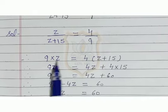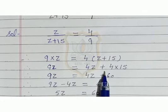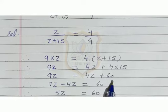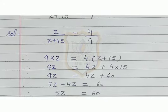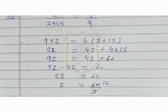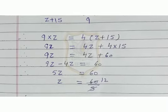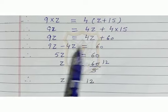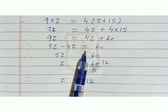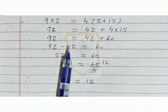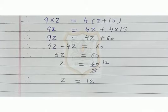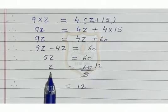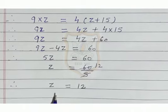So we get 9z equal to 4 multiplied by z plus 15. We open the bracket, so we get 9z equal to 4z plus 60. We will use transposition method and shift 4z from the right hand side to the left hand side. So we get 9z minus 4z, which is 5z, equal to 60. Therefore z equals 60 upon 5, so the value of z is 12.